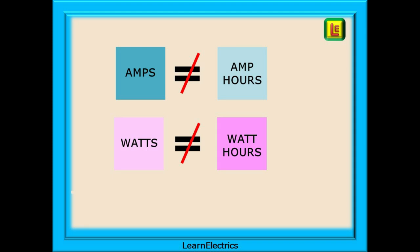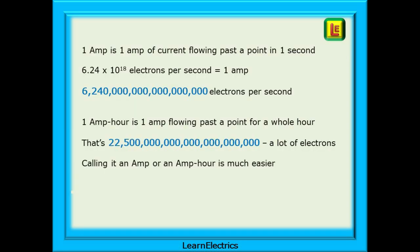To begin, amps are not the same as amp hours — close but different. The same is true with watts; they are not to be confused with watt hours. One amp is one amp of current flowing past a point in the circuit in one second. That's 6.24 times 10 to the 18th electrons per second — 6 million million million electrons every second.